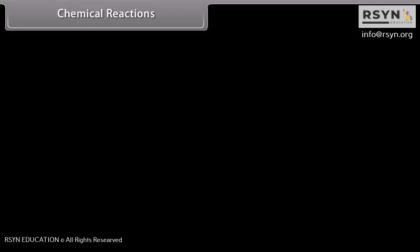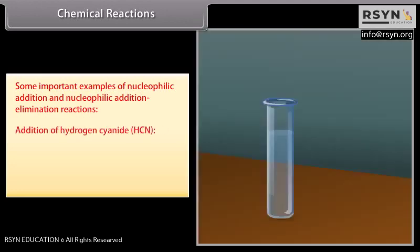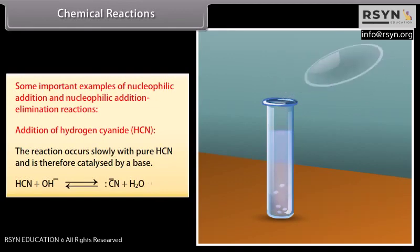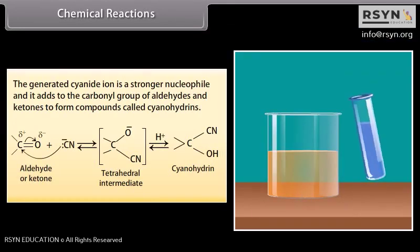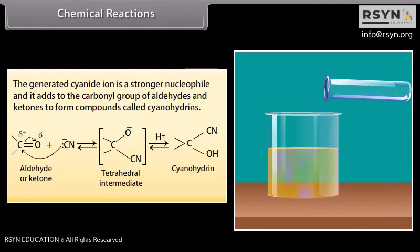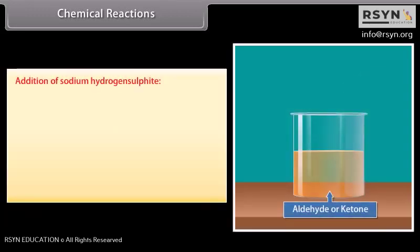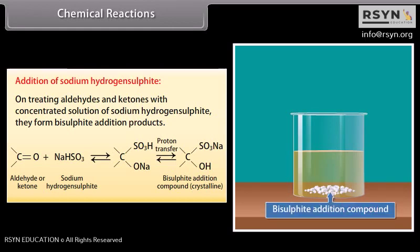Some important examples of nucleophilic addition and nucleophilic addition-elimination reactions. Addition of hydrogen cyanide: the reaction occurs slowly with pure HCN and is therefore catalyzed by a base. The generated cyanide ion is a stronger nucleophile and it adds to the carbonyl group of aldehydes and ketones to form compounds called cyanohydrins. On treating aldehydes and ketones with a concentrated solution of sodium hydrogen sulfite, they form bisulfite addition products.